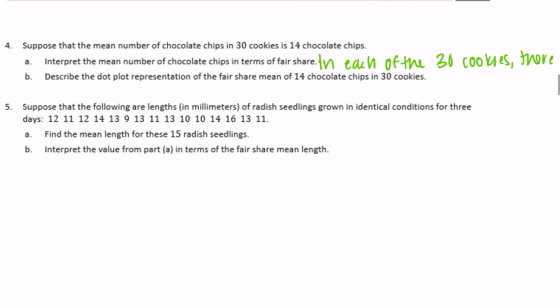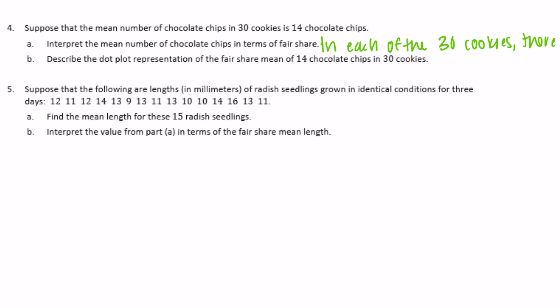Part b: describe the dot plot representation of the fair share mean of 14 chocolate chips in 30 cookies. If we had a dot plot, under 14 chocolate chips there would be 30 different dots to represent that there were 14 in each of those 30 cookies. So there should be 30 dots on the dot plot, all stacked at 14.